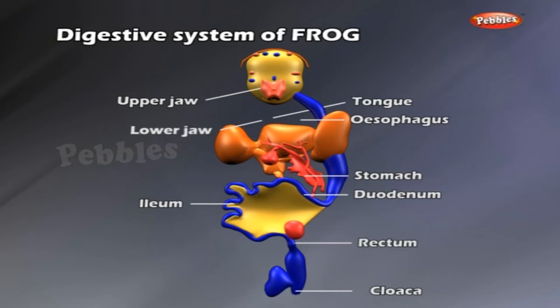The stomach leads to the initial part of small intestine called the duodenum. The duodenum leads into ileum, which runs as a coiled tube, followed by the rectum, which continues and ends in the cloaca. The cloaca is a common opening for three systems: the digestive system, excretory system and reproductive system.